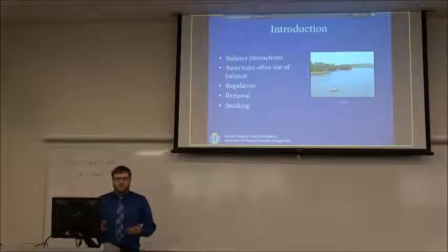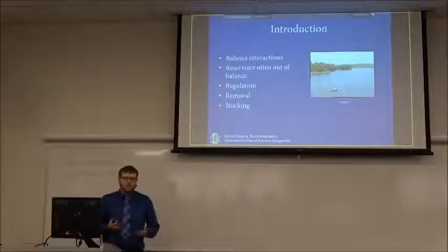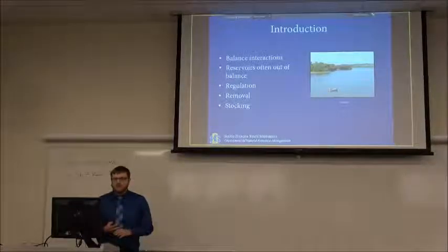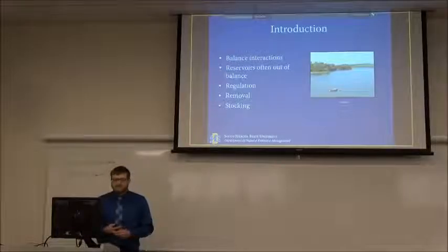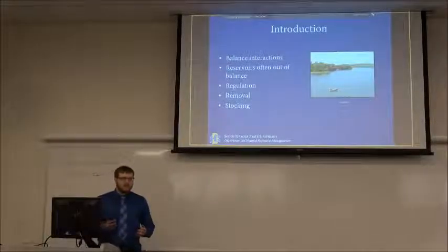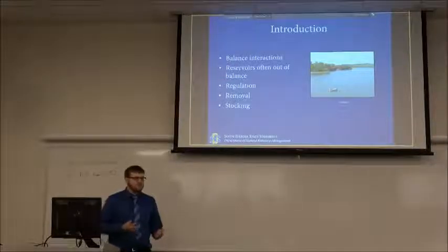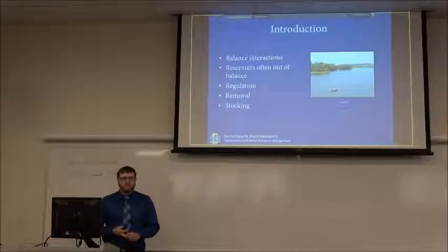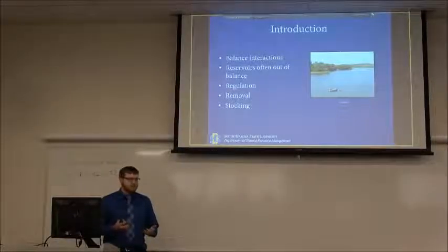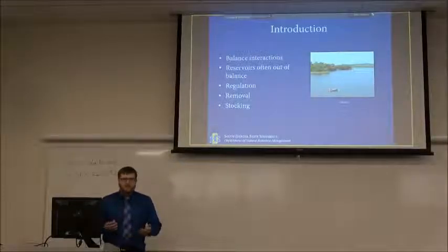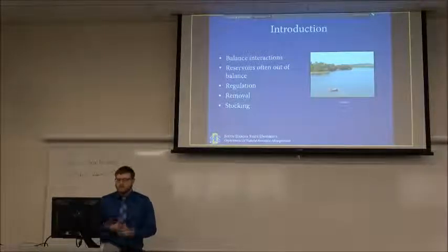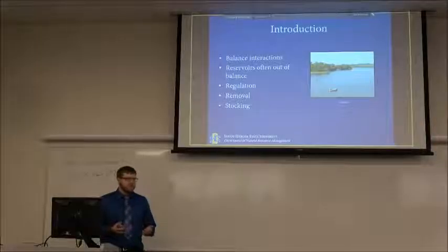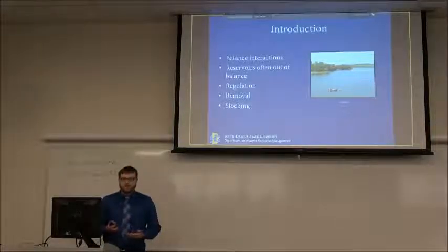Often in these reservoirs, they are out of balance because of several things: the inflow of water bringing in nutrients and other fish species, and how people manage the water either for energy, agriculture, or drawing water out of the reservoir. Some ways to bring imbalance back into balance for predator-prey interactions include regulation — changing the size of fish you can harvest — removal of nuisance species through netting, or stocking predators such as bass, or stocking prey to improve predator species quality.